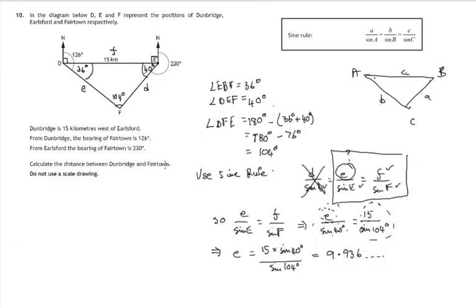That comes to 9.936 and so it goes on. Calculate the distance between Dunbridge and Fairtown. It doesn't give any indication of accuracy. Let's use three figures. So that would be 9.94. Chopping a six off, it would be rounding up. So that's approximately 9.94. Measurements are in kilometres. And that would be to three significant figures.